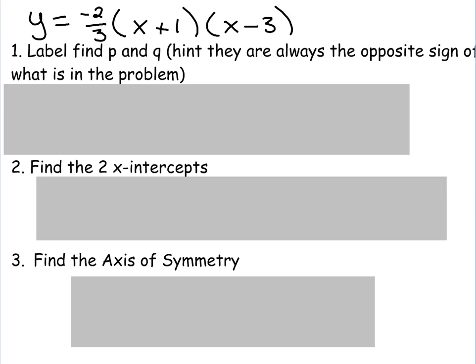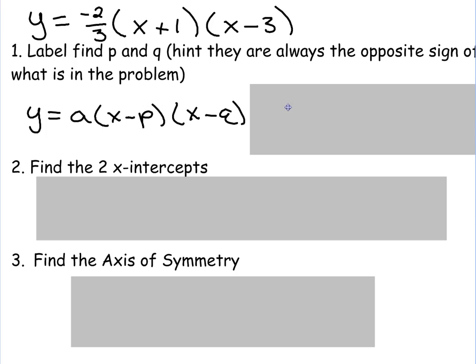First thing we're going to do is to label the parentheses, or to label P and Q. Hint, they are always the opposite sign of what is in the problem. So in this case, my P and Q are negative one and three. They're always the opposite sign because of the negative signs in the problem. The A is not actually used to graph it, so we don't have to worry about the A in this case.